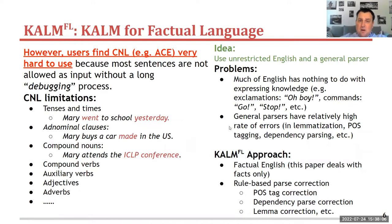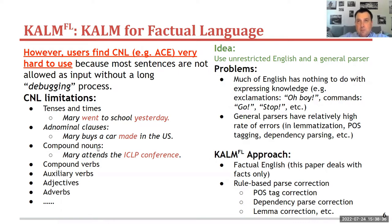However, our users found that the controlled natural language — in this case Attempto Controlled English — is very hard to use, because most sentences are not allowed as inputs without a long debugging process. The reason is that Attempto only allows present tense, so you cannot represent sentences like 'Mary went to school yesterday'. Adnominal clauses are also not allowed, like 'Mary buys a car made in the US'. Compound nouns must be explicitly defined. So it takes a lot of effort to represent sentences in the controlled natural language we chose.